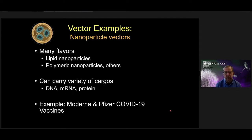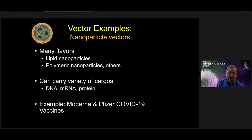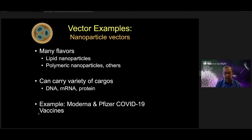Another type of vector is a non-viral nanoparticle vector, which comes in many flavors. One widely used type is a lipid nanoparticle, but there are also polymeric nanoparticles using lipids, proteins, and other components. They can carry a variety of cargos: DNA, messenger RNA, and protein. The Moderna and Pfizer COVID-19 vaccines are an example of delivering mRNA cargo in a lipid nanoparticle — so most of us have been exposed to this already.